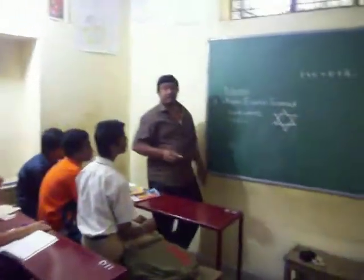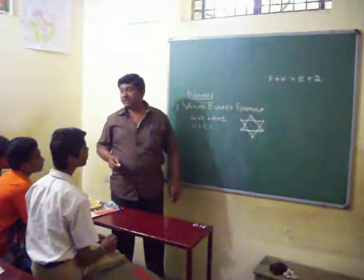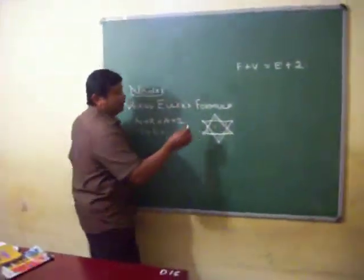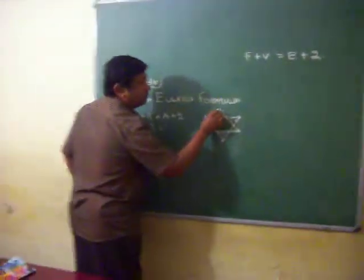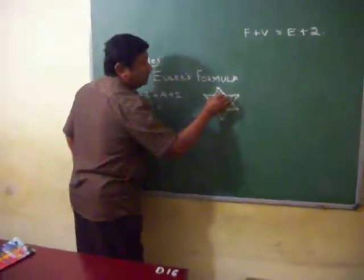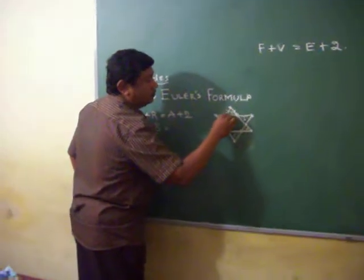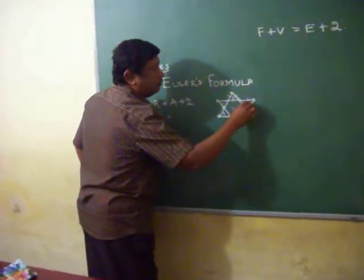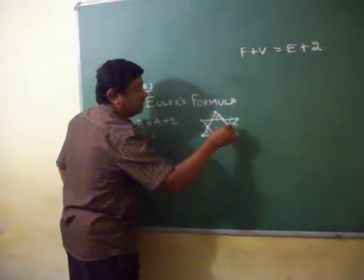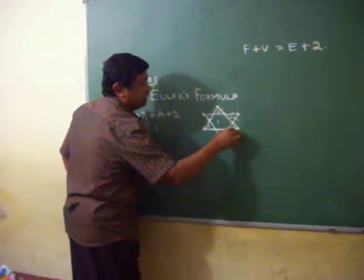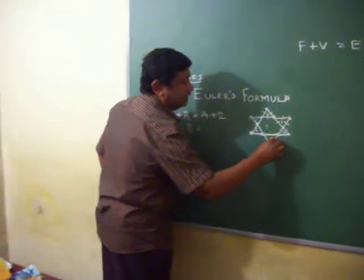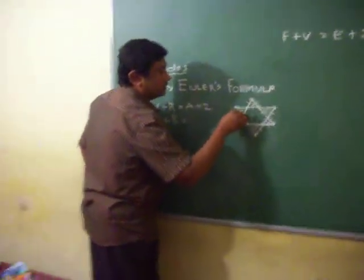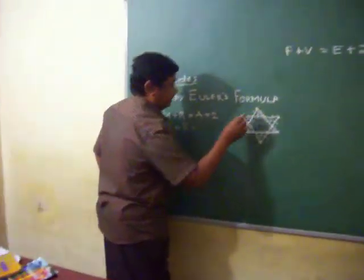Now let us see arcs. How many arcs are there? Arcs are the distance between two points. So counting: 1, 2, 3, 4, 5, 6, 7, 8, 9, 10, 11, 12, 13, 14, 15, 16, 17, 18. So 18 arcs we have.